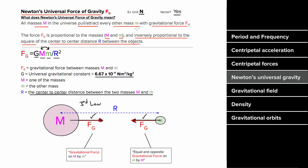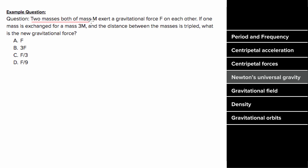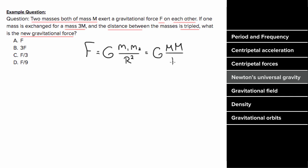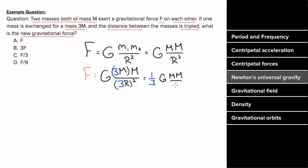So what's an example problem involving Newton's universal law of gravity look like? Let's say two masses, both of mass m, exert a gravitational force F on each other. If one mass is exchanged for 3m and the center-to-center distance is tripled, what is the new gravitational force? The initial force is G m squared over r squared. The new force is G times 3m times m divided by (3r) squared. The three squared on the bottom gives nine, so three over nine is one third — the new force is one third of F.